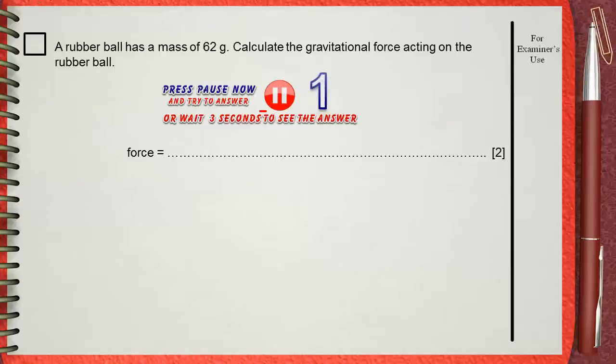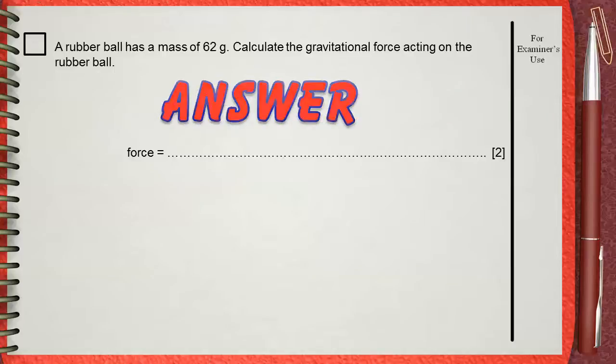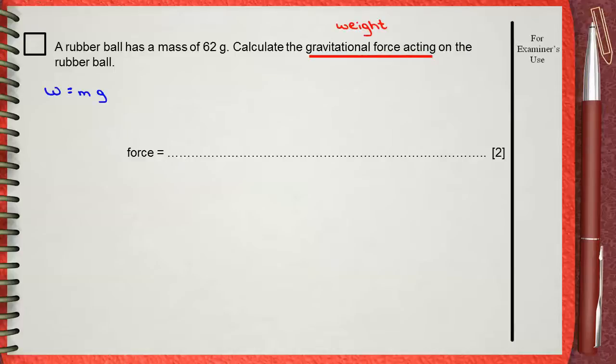The expression gravitational force - again, our rule will be W equals MG. But there is something you must take care of. If you answer it directly, this means 62 times 10, where 10 is the acceleration due to gravity G. And this shows that the weight will be 620 Newtons.